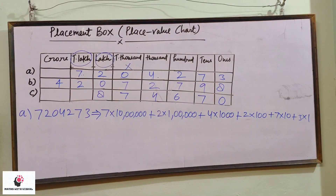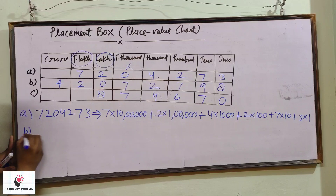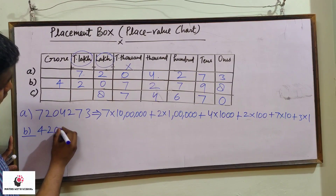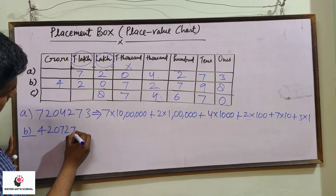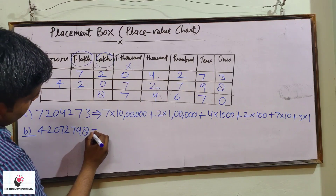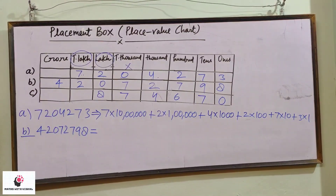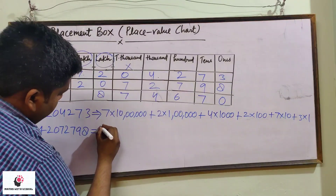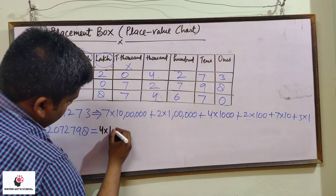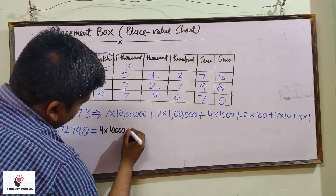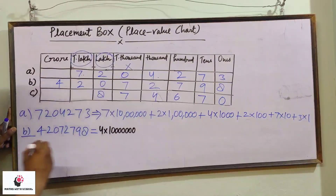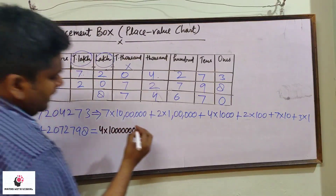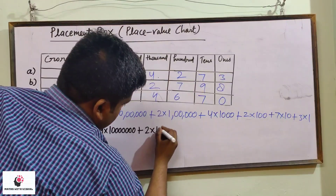Now for the second number: the number is 4,20,72,798. Four into one crore — one crore has seven zeros: 1,00,00,000. So four into one crore, plus two into ten lakh.